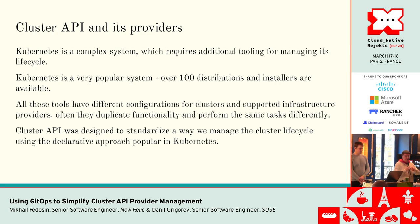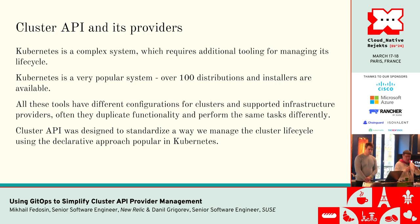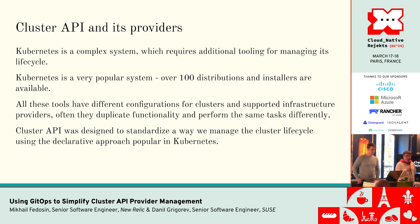The main provider type is called Core, and it defines top-level abstractions like machine, cluster, machine deployment, and so on. Then we have Bootstrap and Control Plane provider types. The first is used to add new nodes to the cluster, basically configuring kubelet, and the second is for configuring control plane components like kube API server, kube controller manager, and so on.